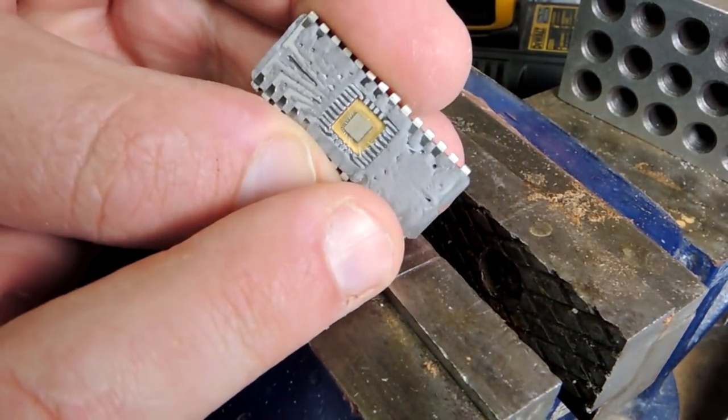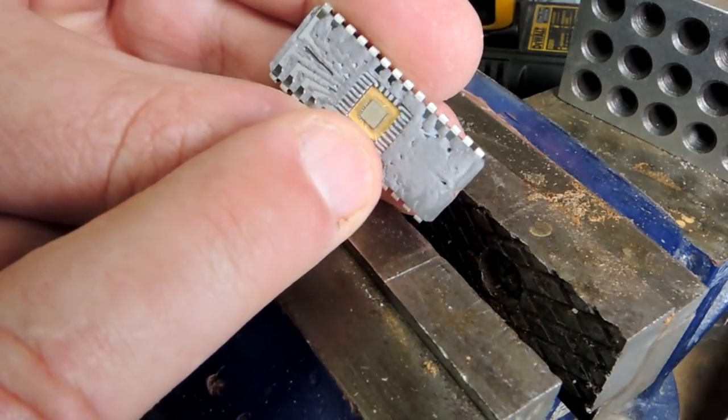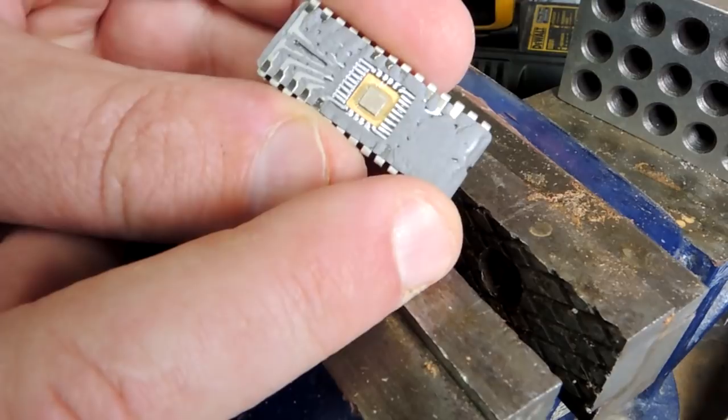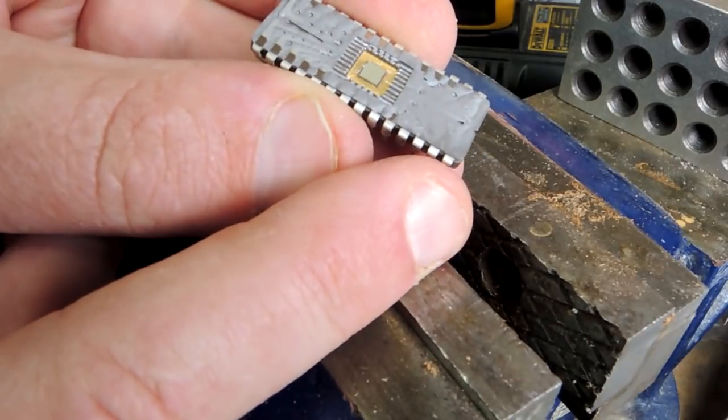The nice thing about these ceramic packages is they're very easy to analyze. Let's throw this under the camera and we'll take a picture of the whole die and then we'll toss it into the microscope to figure out what in the world this thing was.